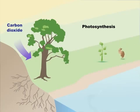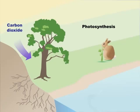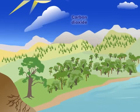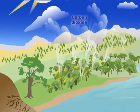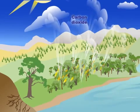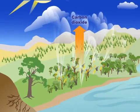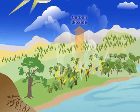When animals eat plants, they use this carbon for energy and to build their own bodies. One way that carbon dioxide gets into the atmosphere is when plants burn in a wildfire, and their carbon is converted back into carbon dioxide.